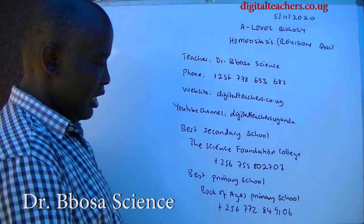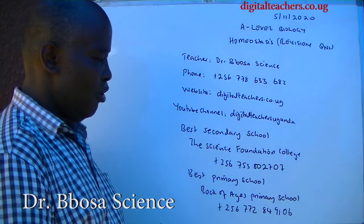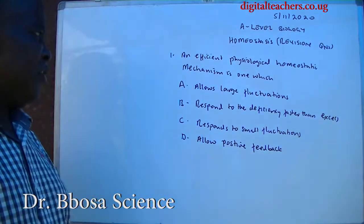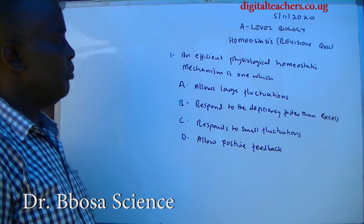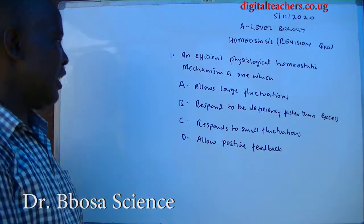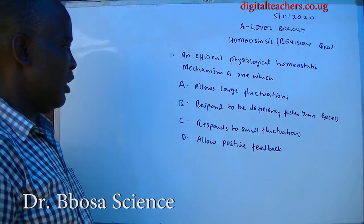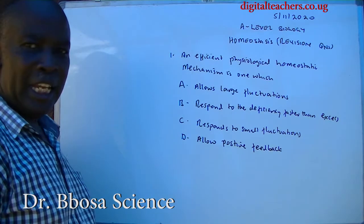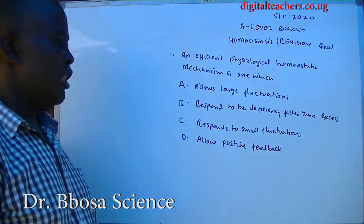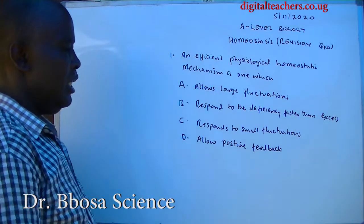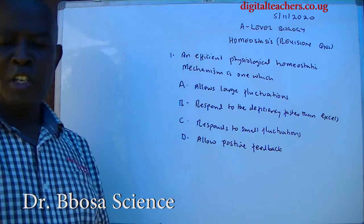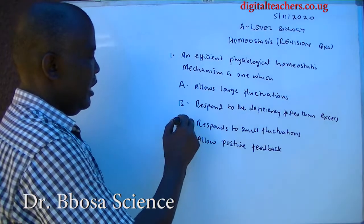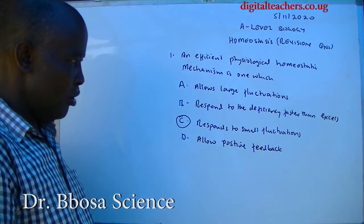One inefficient physiological homeostatic mechanism is one which: A. Allows large fluctuations, B. Responds to deficiencies faster than excess, C. Responds to small fluctuations, D. Allows positive feedback. The answer is C: Responds to small fluctuations.